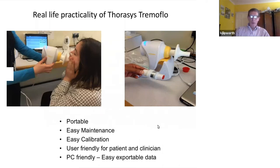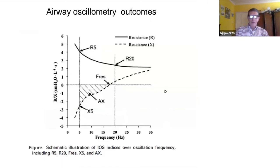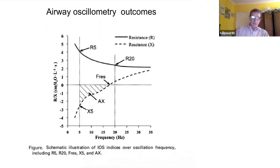The data is very easy to export from the laptop, which is why we adopted this machine after looking at all airway oscillometry machines. The output is a relationship of pressure — in centimeters of water or kilopascals — to flow in liters per second, giving centimeters of water per liter per second. The impedance has two components: R for resistance and X for reactance, which I prefer to call compliance as it's more descriptive.